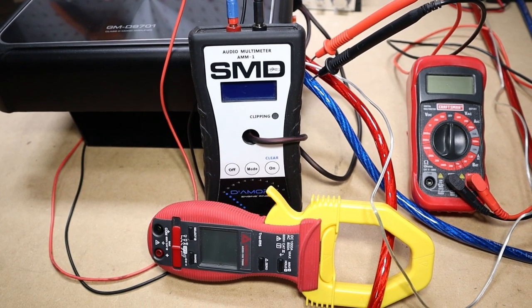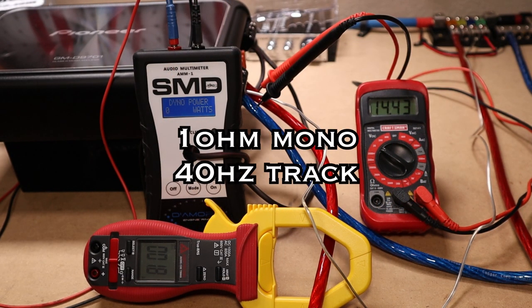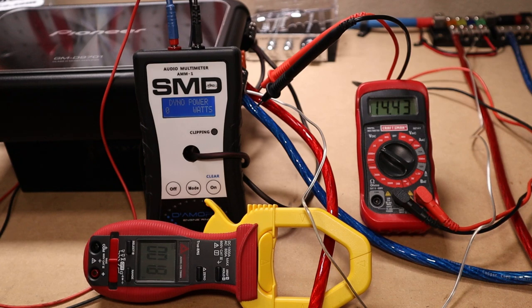For the dyno portion, we're going to use a 40 hertz track. It's going to be at one ohm mono, and we're going to do this before we start the one minute test. And it'll be exactly the same on both amps.